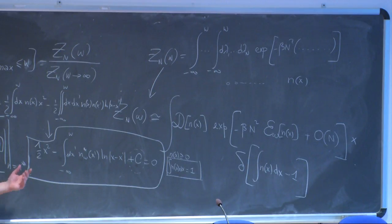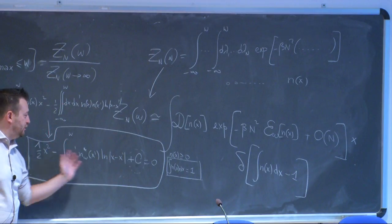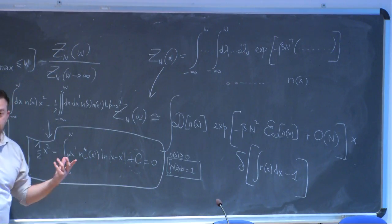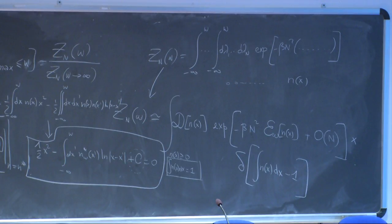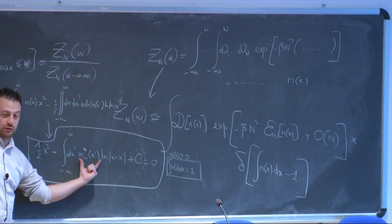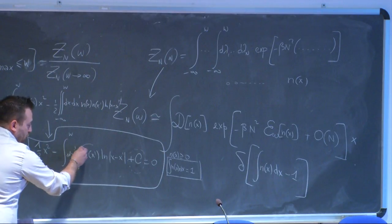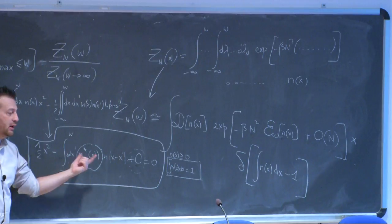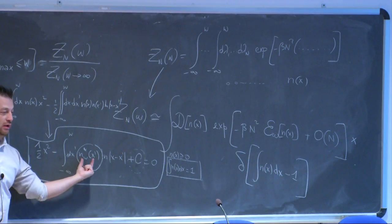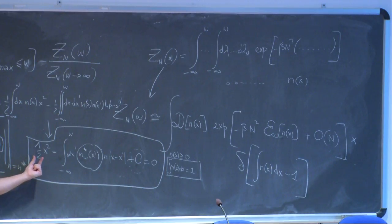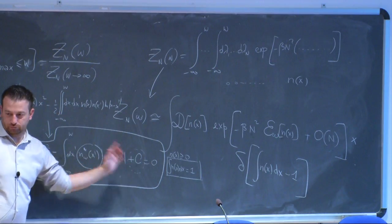Now we can forget where this equation came from and just need to solve it. What kind of equation is this? If you were to describe it to a mathematician: this is an integral equation, because the function we want to determine is inside the integrand. That is the unknown — we want to determine it such that this equation is satisfied. The technical challenge is how to find a function that, when integrated over a logarithmic kernel, reproduces a quadratic behavior plus a constant.